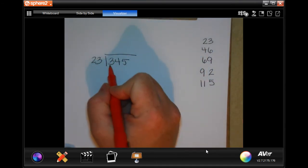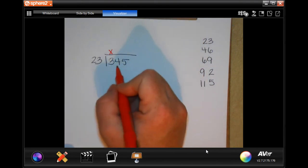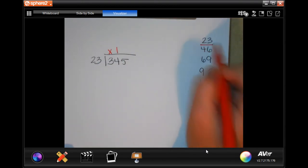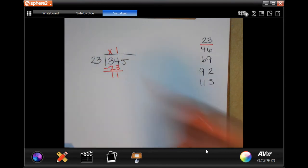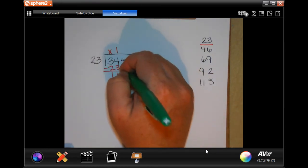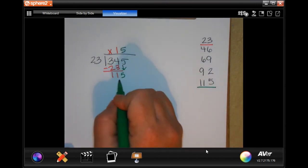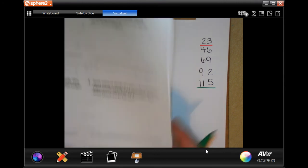All right, so 23 is not going to go into 3, placeholder. 23 will go into 34 once, that's the closest I'm going to get. 1 times 23 is 23, subtract and get 11. Now 11 is smaller than 23 so I can bring down my 5. And look, 1, 2, 3, 4, 5 times.